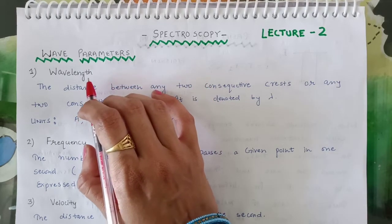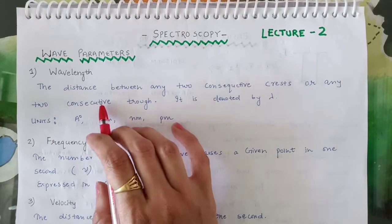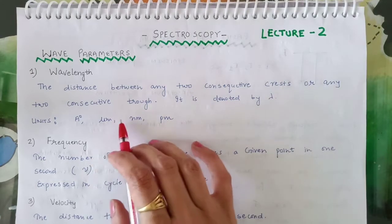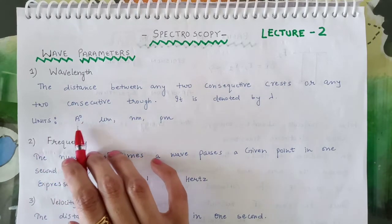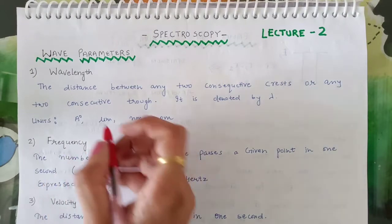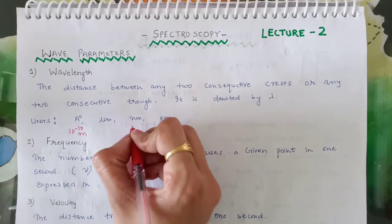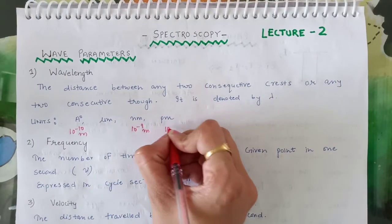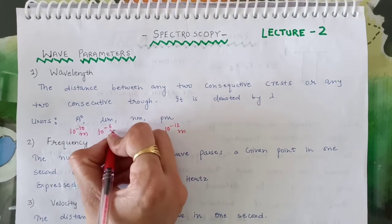The first property or parameter is wavelength. Wavelength can be defined as the distance between any two consecutive crests or any two consecutive troughs. It is denoted by lambda and units are similar to that of length: angstrom (10⁻¹⁰ m), nanometer (10⁻⁹ m), picometer (10⁻¹² m), and micrometer (10⁻⁶ m).